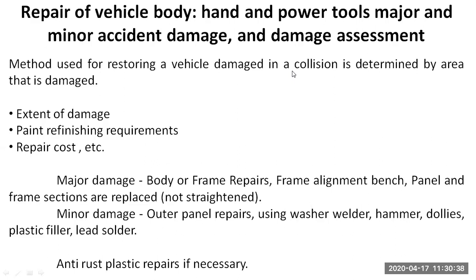Different methods for restoring a vehicle damaged in a collision are determined by the area and extent of damage. If only the outside panels are damaged, replacing or taking out dents from those panels may clear the accident damage. You also need to know the paint refinishing requirement — if a very small area has paint chipped off due to denting, you need to determine the most suitable painting process, which may not require painting the entire component. A door slightly damaged with paint chipped off may only need a touch-up.